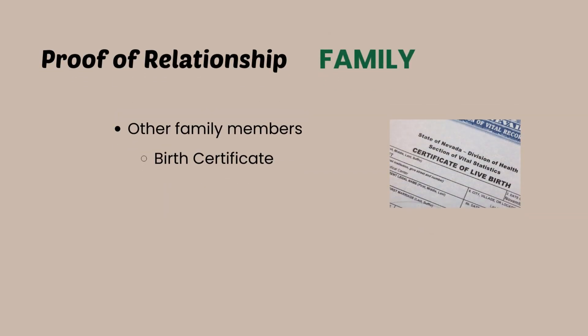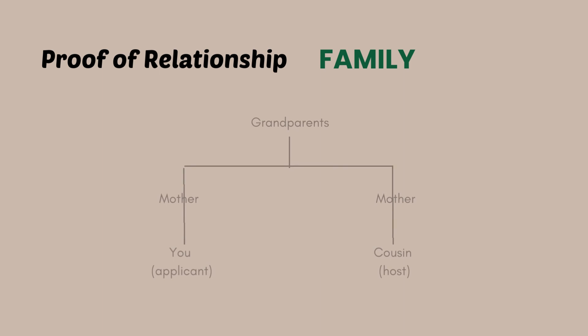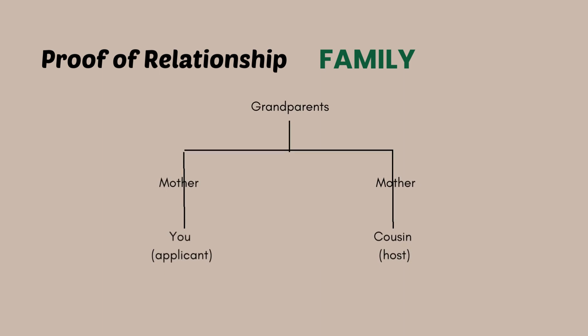Now, what if it's your cousin or your aunt? Then you will have to take into consideration how your relationship is based on your family. For example, if you are going to be visiting your cousin in Sweden, you will need your birth certificate, your cousin's birth certificate, and the birth certificates of the parents who are siblings, so that the authorities will be able to trace your familial relationship. Those are the requirements for family members — quite easy, right?